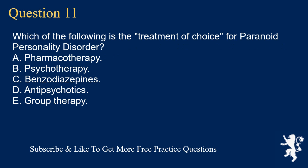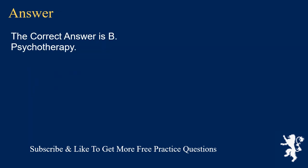Question 11. Which of the following is the treatment of choice for paranoid personality disorder? A. Pharmacotherapy. B. Psychotherapy. C. Benzodiazepines. D. Antipsychotics. E. Group therapy. The correct answer is B. Psychotherapy.